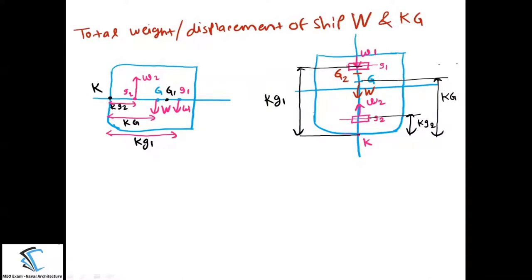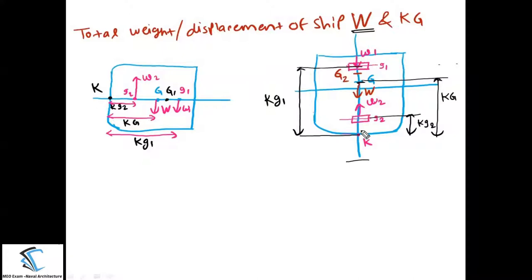How to calculate the new center of gravity when you are loading and unloading cargo simultaneously. Consider there is one ship viewed in the transverse view. The total weight of the ship is capital W and the location of the center of gravity from the keel is KG. For this first numerical, I am adding and discharging cargo from the center line only for simplicity.